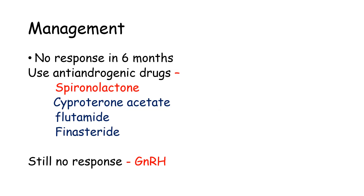If after using OCP for 6 months there is still no response, we try anti-androgenic drugs. The most effective one is spironolactone. Other drugs that can be used include cyproterone acetate, flutamide, or finasteride. If there is still no response, we use gonadotropin-releasing hormone (GnRH) in continuous dose, which suppresses LH and FSH and reduces the level of androgens in the body.